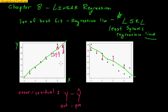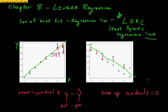We want to add all those residuals up. You have the best line — the line of best fit, the least squares regression line — if you add up all those residuals and get zero, because you want the positive residuals to cancel out with the negative residuals, meaning your line was perfectly balanced in between all of them.